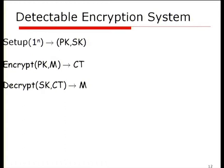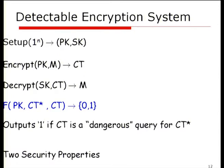Getting more formal: a detectable encryption system has the usual algorithms — setup, encrypt, and decrypt — but I also add a detection function f, which takes as input a public key, CT star (the challenge ciphertext), and CT, and outputs one if the query is dangerous and zero if it's not.